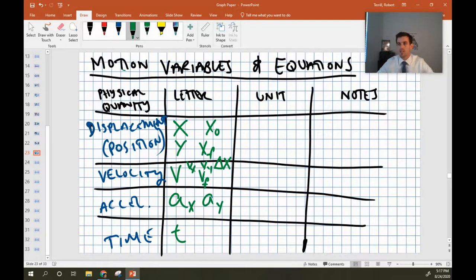So that hits all of the different letters, the variables that you might come across. Now let's talk about units. The units of position are always meters, which is represented with an m.